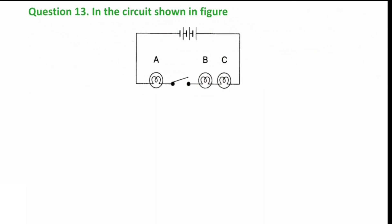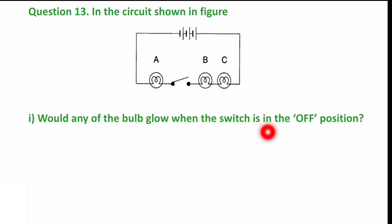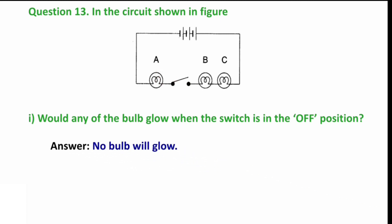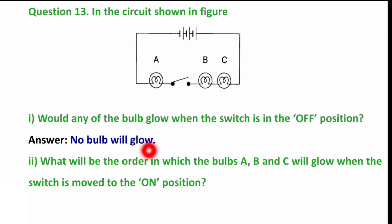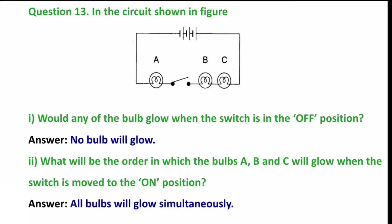Next question: in the given circuit, would any of the bulbs glow when the switch is in the off position? No, no bulb will glow because when the switch is off, current gets no complete path. Next: what will be the order in which bulbs A, B, and C will glow when the switch is moved to the on position? All bulbs will glow simultaneously — because current does not take noticeable time to flow, so all bulbs start glowing at the same time. Here I have explained the entire exercise.